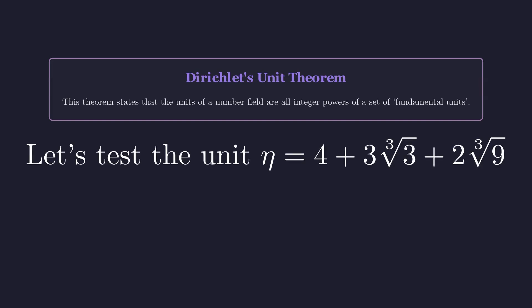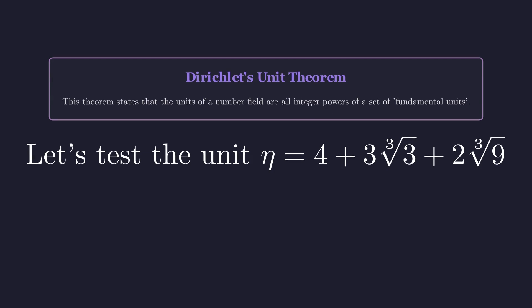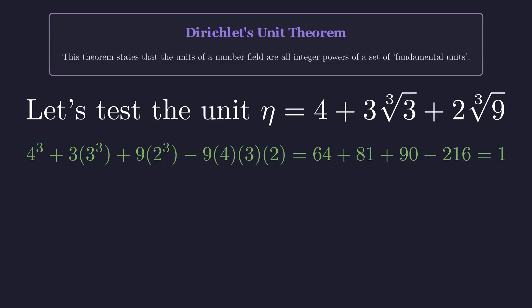A known unit in this field with small positive integer coefficients is eta, given by a equals 4, b equals 3, and c equals 2. Let's verify its norm is indeed 1. Plugging these values into our norm expression, we get 64 plus 81 plus 72 minus 216, which equals 1. It is a unit. However, the coefficients are not two-digit numbers.